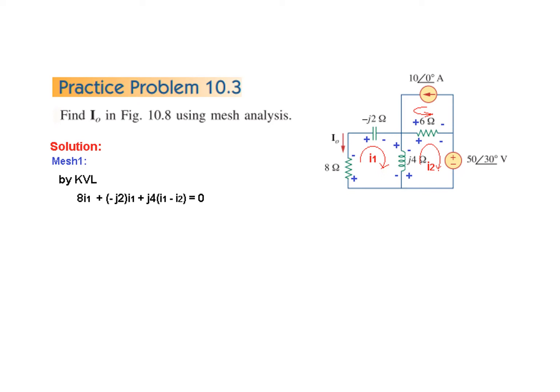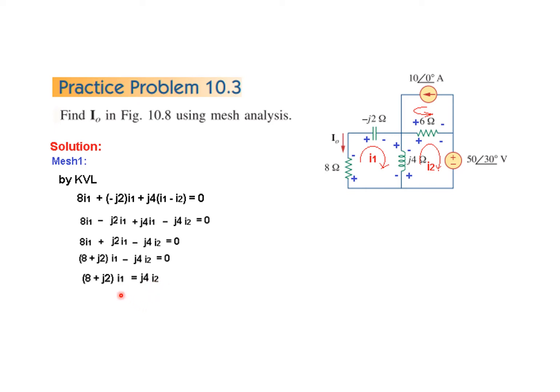When we come here, there are two currents — i1 and i2. Since we are in mesh one, we write i1 first: j4 times (i1 minus i2). The directions are opposite — one is going top to bottom and the other bottom to top — that is why we use a minus sign. We arrange the values and write it in a form from which we can calculate i2 in terms of i1.